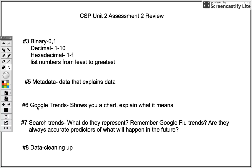Number six is about Google Trends. It shows you a chart — kind of like your assessment project that you did, but they already made the chart for you. They ask you some questions and you have to understand what Google Trends shows. Just as a reminder, Google Trends is just what people searched up. So just because people search up the word 'red' a lot doesn't mean the world is invaded by red crayons. It's a compilation of everything people were searching using Google, YouTube, and all that stuff.